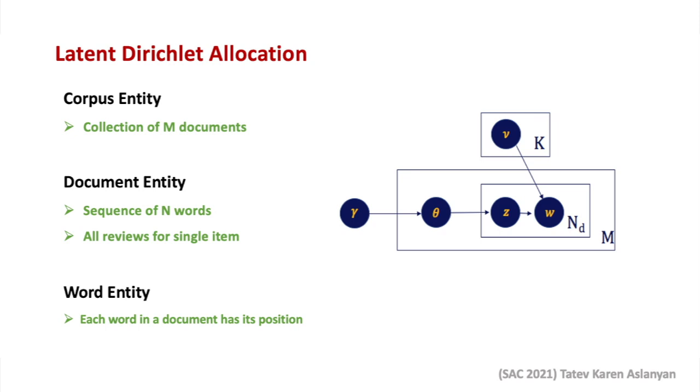There are three main entities in the LDA method: the corpus, the document, and the word entities. The first one is the entity of the corpus, which represents the collection of all documents. In our case, that's the collection of all reviews. In this figure, which visualizes the LDA model, the corpus entity is represented by the large rectangle where the letter M refers to the number of documents. The second entity is the entity of documents, which is a sequence of N words. In our setting, we assume that all the reviews of a single item combined represent a single document. In this figure, the document entity is represented by the medium-sized rectangle inside the large corpora entity, where N_D refers to the N words in document D. The final and third entity is the entity of words, represented by the circle in the right-hand side within the document entity, and is denoted by the letter W.